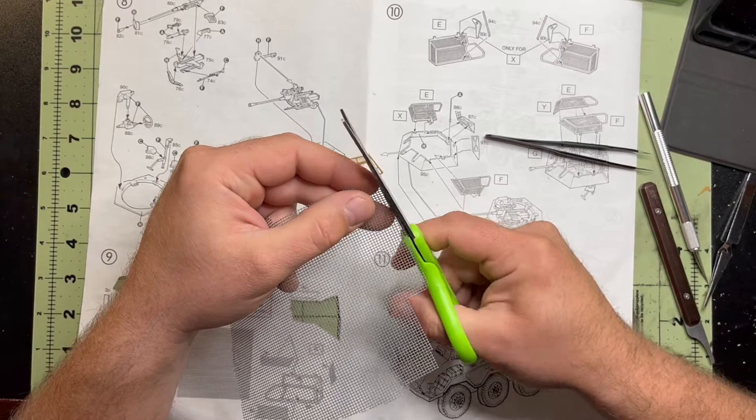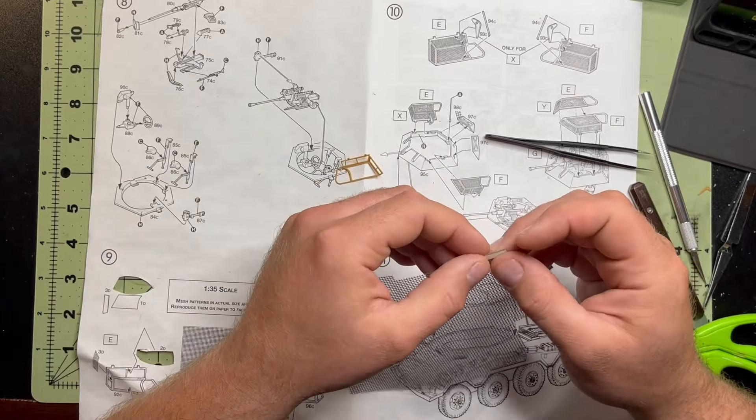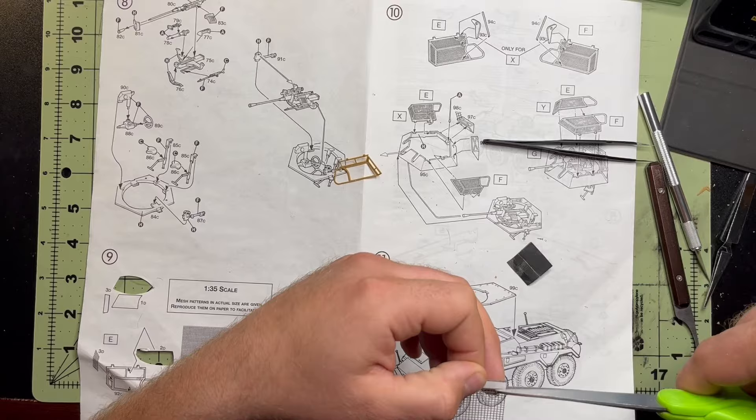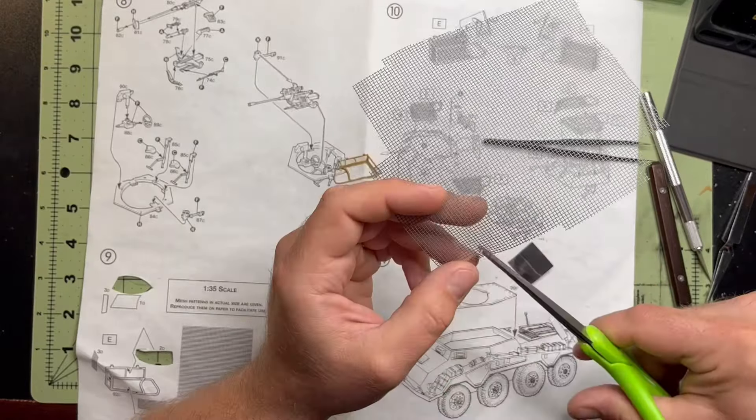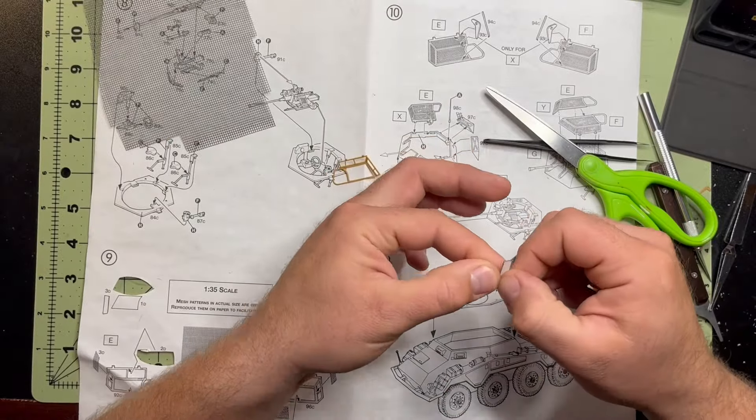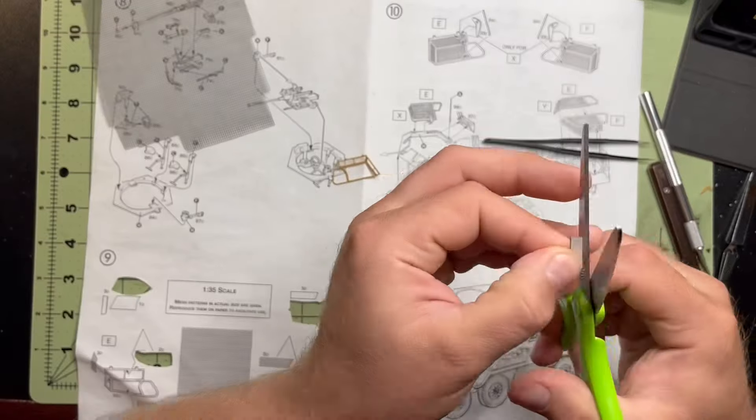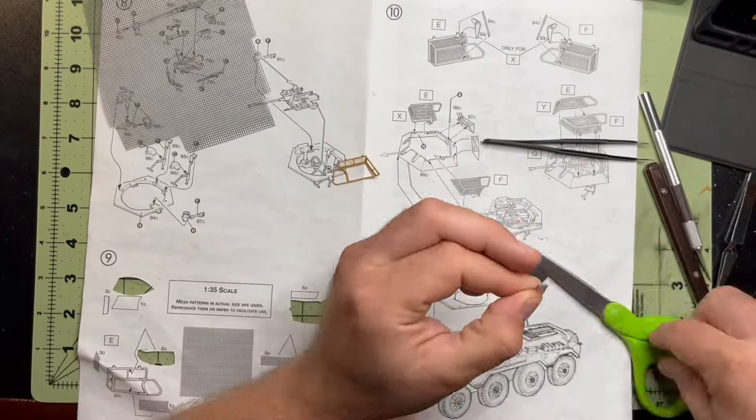So here's something that drives me nuts. When you have a model that has to have metal screening or anything like that, they always give you just enough to get it right the first time. And if you don't get it right the first time, you are SOL.